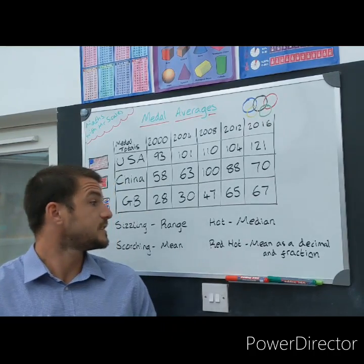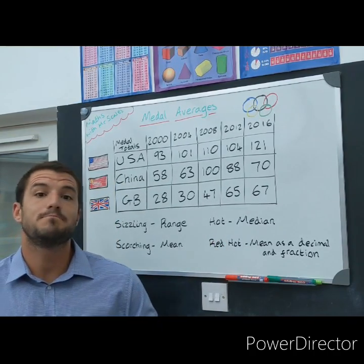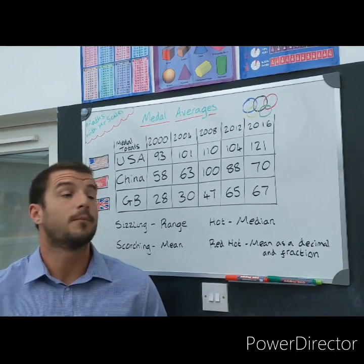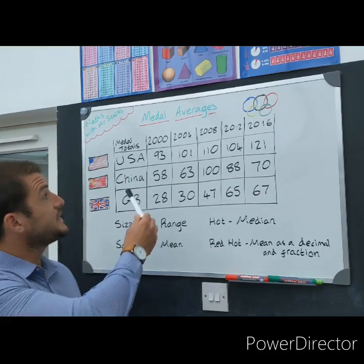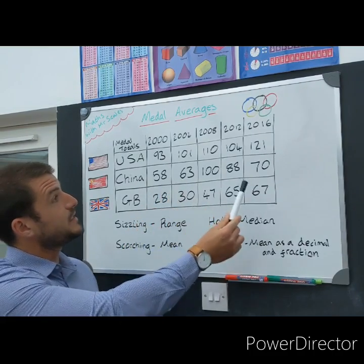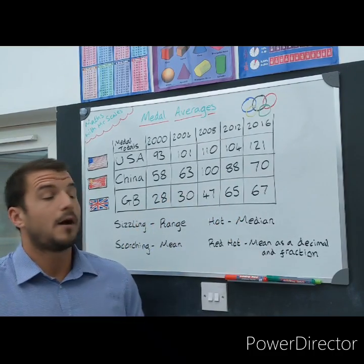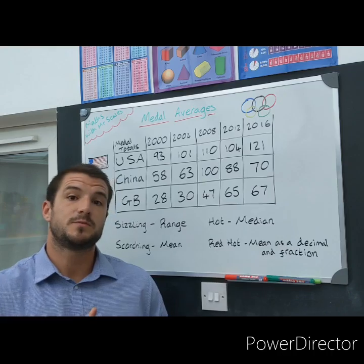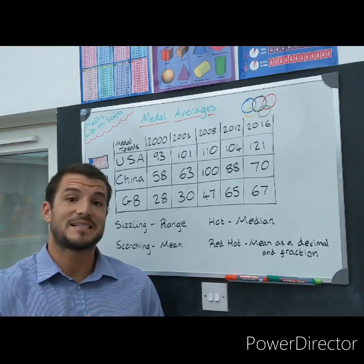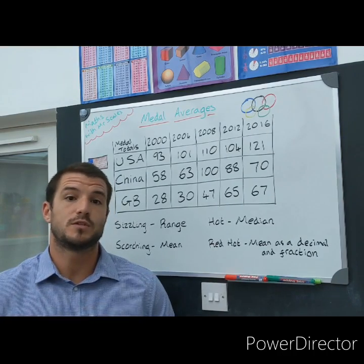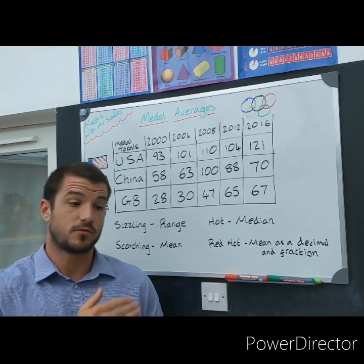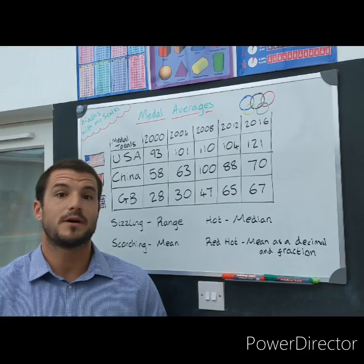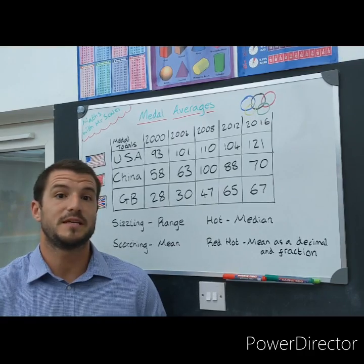Our hot challenge: you're going to be working out the median. Now that's the middle number. The data here is as it goes year by year, however to work out the median what you need to do is put the numbers in ascending order first — from the smallest to the largest — then that middle number is your median.